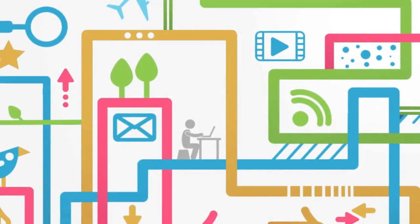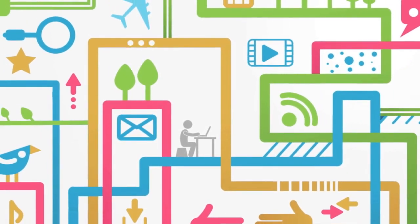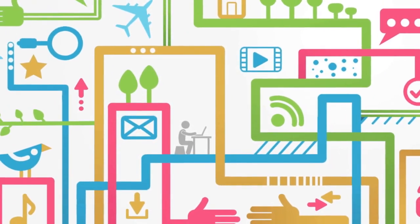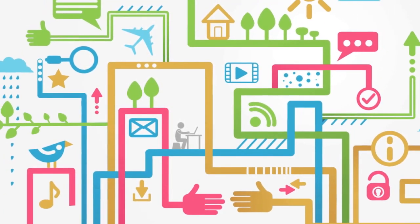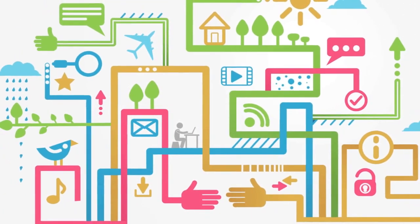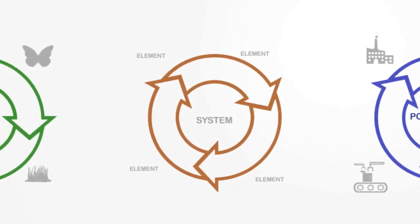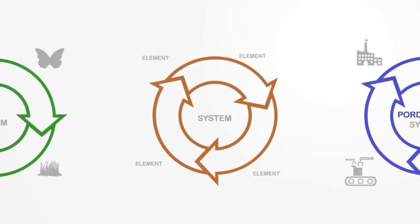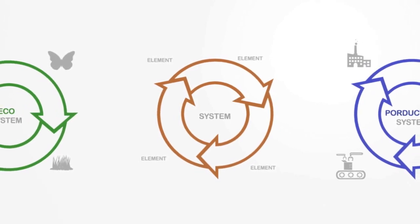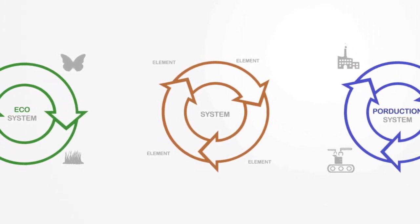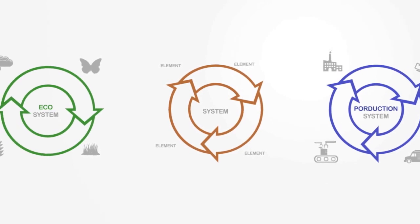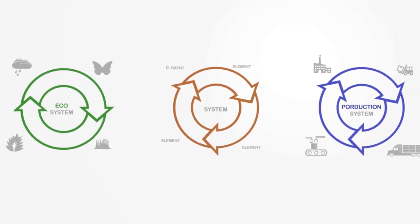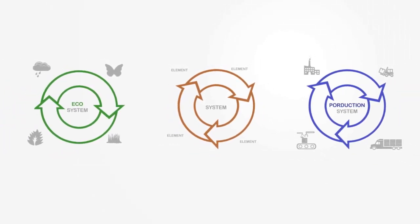Every day when we switch on the lights, connect to the internet or commute to work, we are forming part of what are called complex systems. But to understand complex systems, we need to talk a bit about systems in general first. A system is a type of model we use to understand the world around us. In its essence, it is a group of parts called elements that function together to form a whole that is called the system. This very simple and abstract model can be used to describe a wide variety of things.